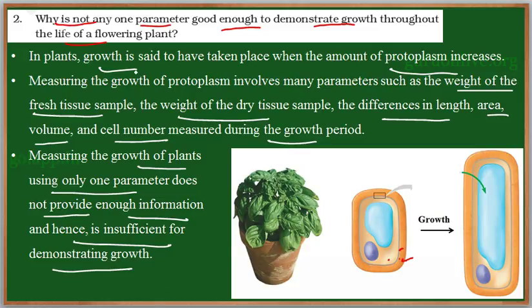That is why the question asks: why is not any one parameter good enough to demonstrate growth? There are many parameters required to determine whether growth has taken place or not. By measuring all these parameters together, we can come to a conclusion that growth has taken place.